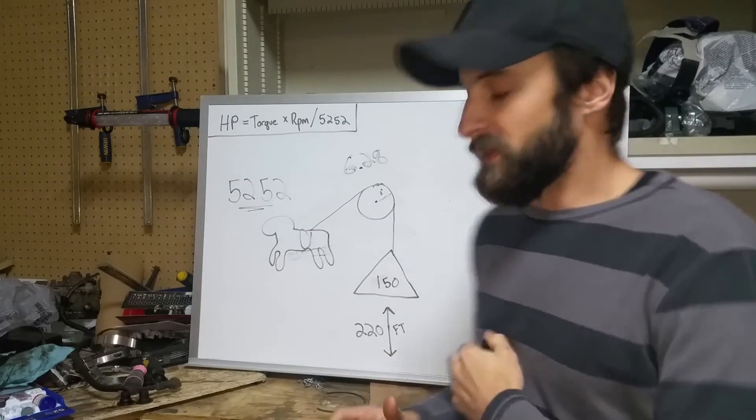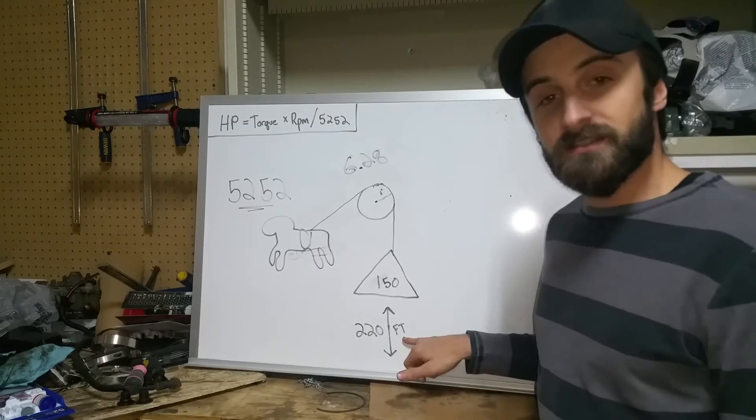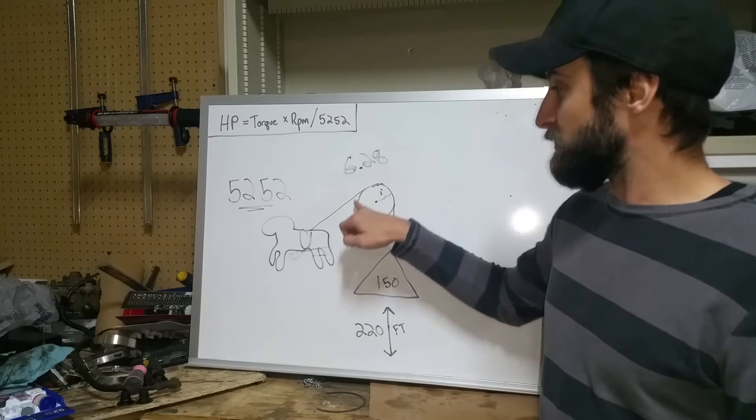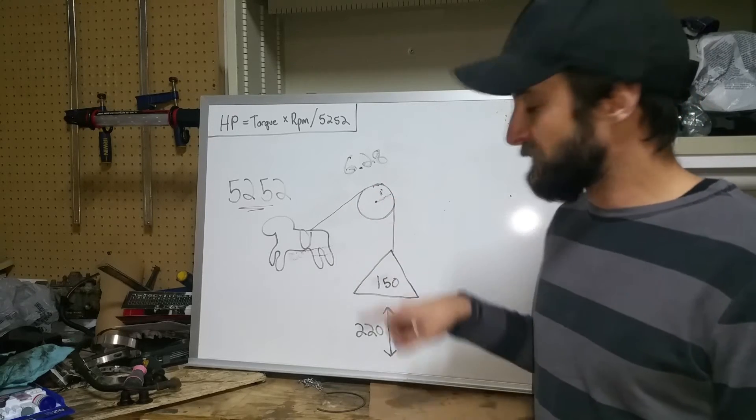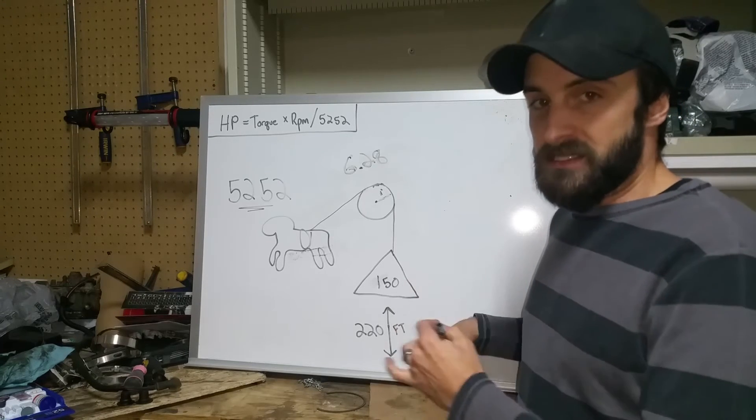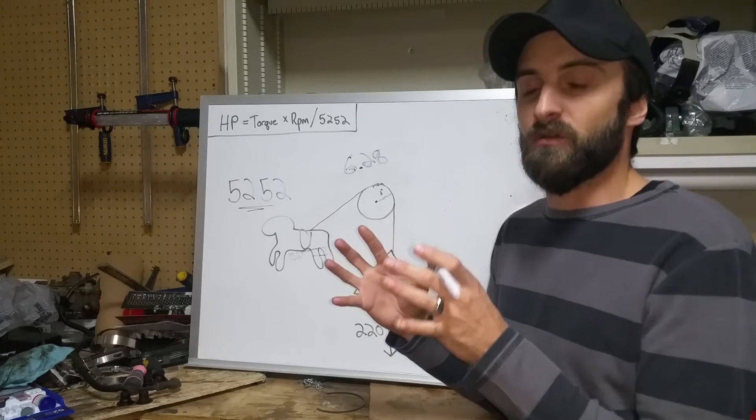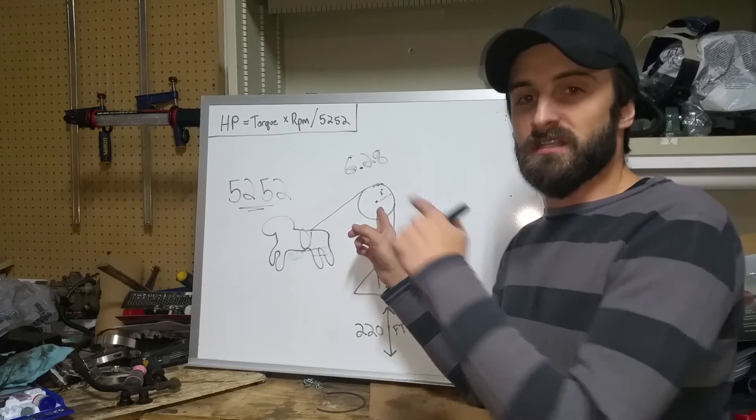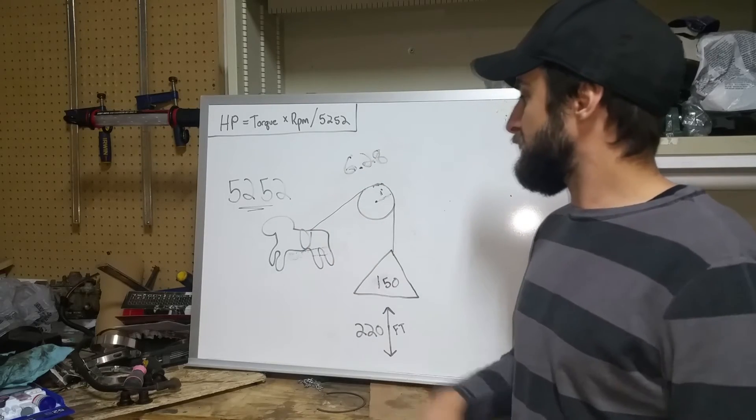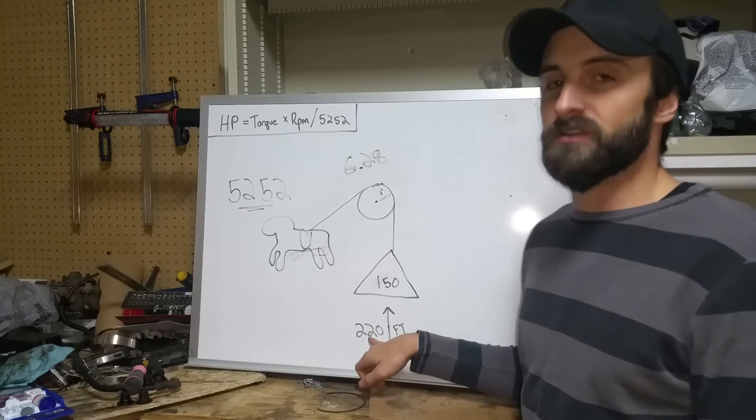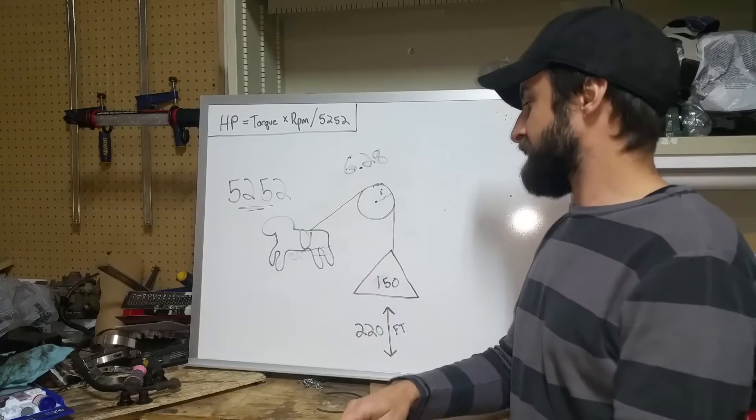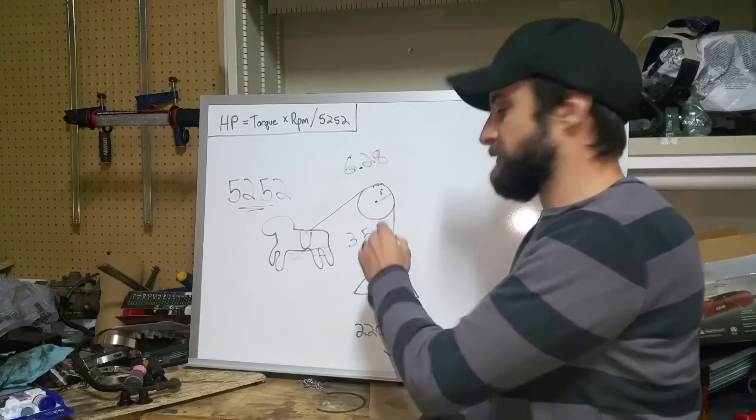So next thing we need to do here is take this linear distance, the linear distance that this weight is traveling up, and turn that into how many revolutions per minute this thing is going to take. So we have a 150-pound weight moving 220 feet in one minute. So what we're trying to figure out here is how many times does this circle rotate in that same one minute. So if we have this distance, we're going to take 220 feet, divide it by 6.28, and that's going to give us roughly 35 RPM.